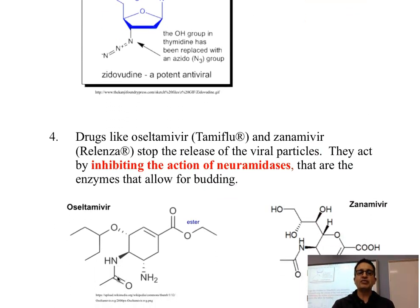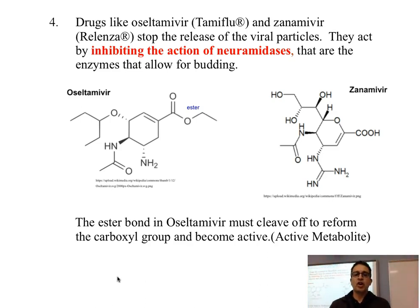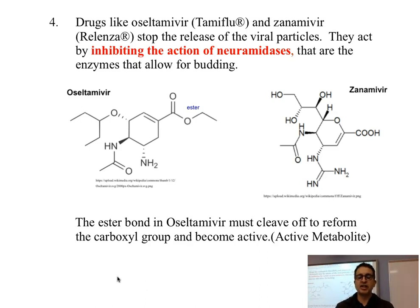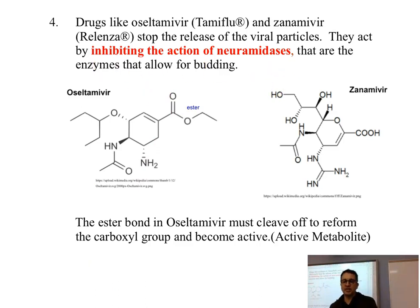The fourth approach involves drugs such as oseltamivir, which is Tamiflu, and zanamivir, which is Relenza. Both are drugs that act on the flu. Their structures are on page 39 of your data booklet, table 37. What these two drugs do is stop the host cell from lysing and releasing the viral particles. They do not allow little bubbles on the cell wall to form, burst, and release the viral particles. They achieve this by inhibiting the action of neuraminidases.